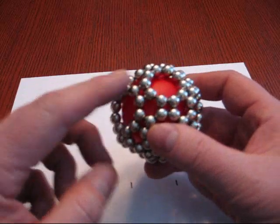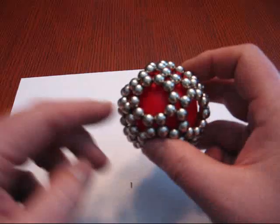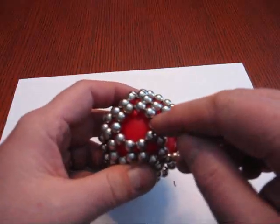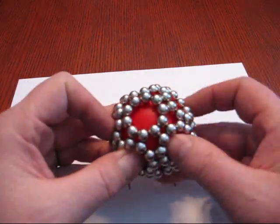Now, an interesting thing about this: it has twelve rings of ten beads, so that's a total of 120 beads. If you do the math, we've got twelve rings, so it's a twelve-sided figure—a dodecahedron.